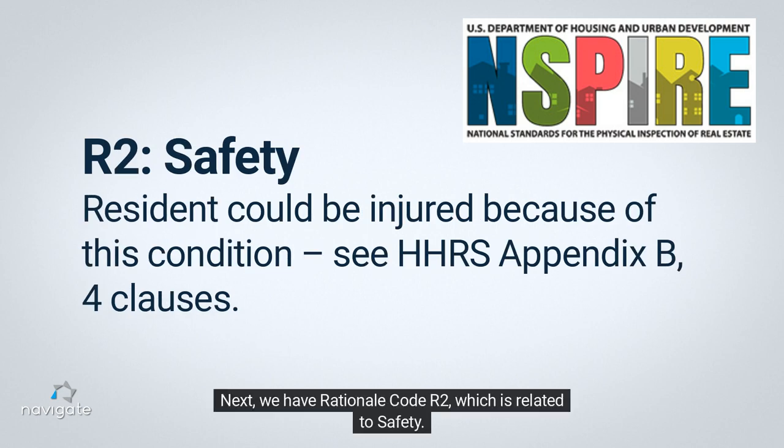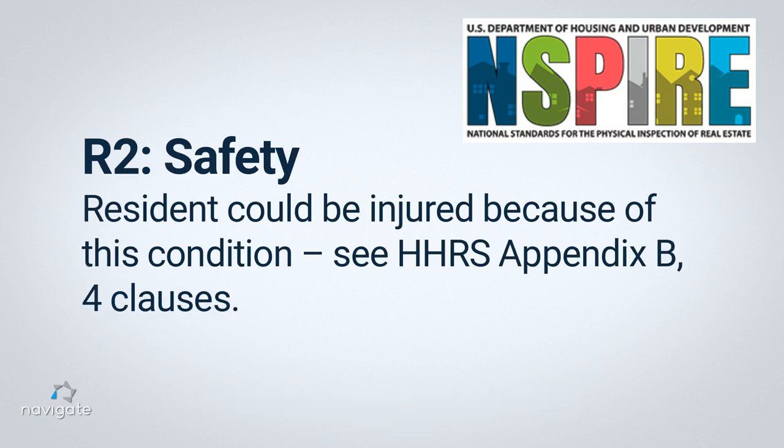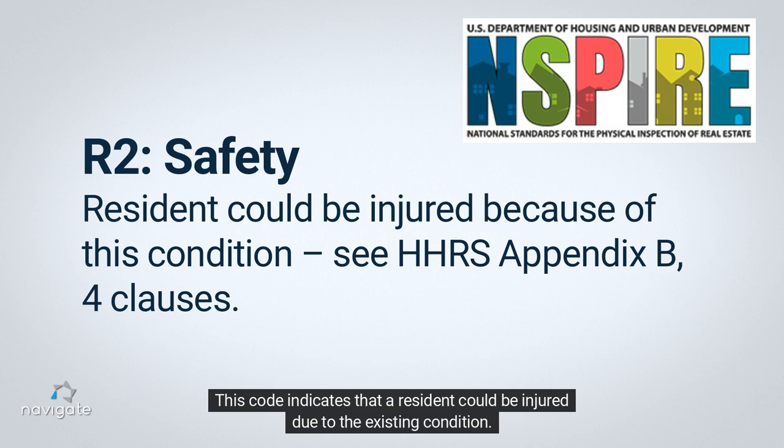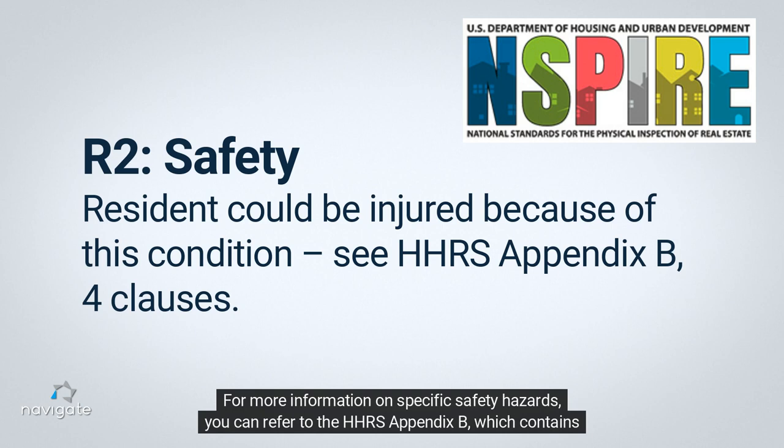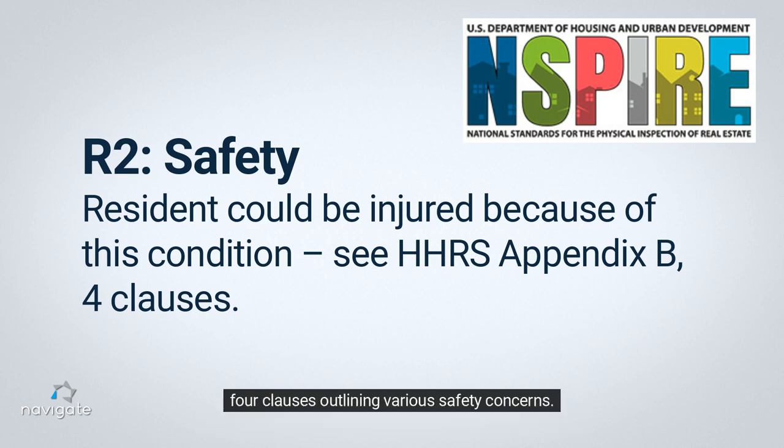Next, we have rationale code R2, which is related to safety. This code indicates that a resident could be injured due to the existing condition. For more information on specific safety hazards, you can refer to the HHRS Appendix B, which contains four clauses outlining various safety concerns.